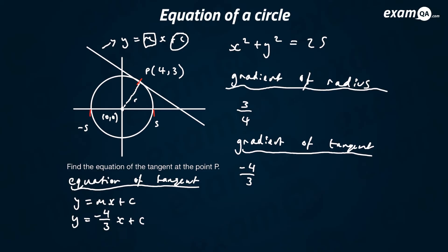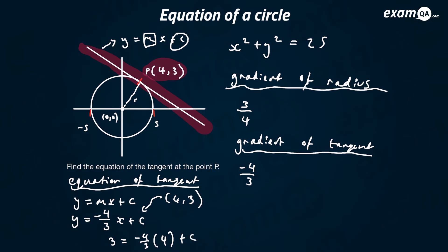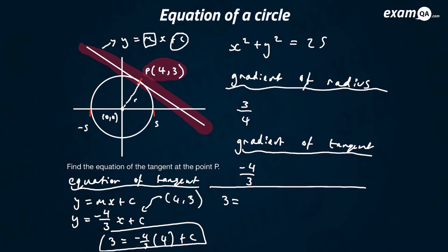Now to work out c — it's just a simple equation of a line question. To find the y-intercept, you plug in a point on the line. We know point P, which is (4, 3). Plugging in: 3 equals minus 4 over 3 times 4 plus c, which gives 3 equals minus 16 over 3 plus c. You can use a calculator: c equals 3 plus 16 over 3, which is 25 over 3.